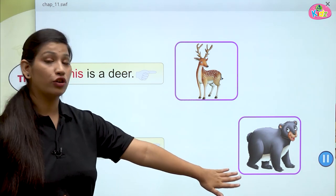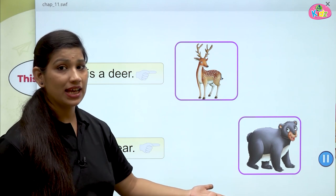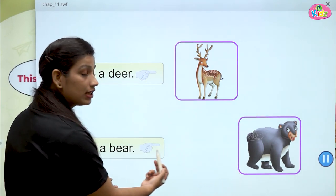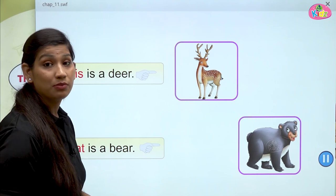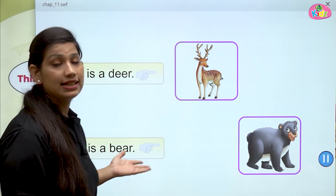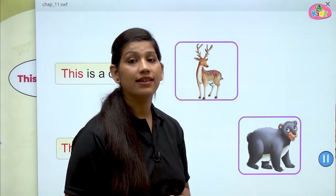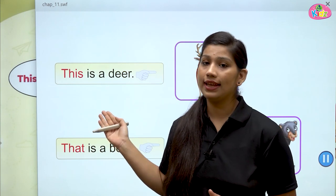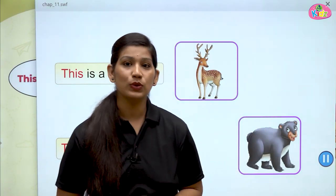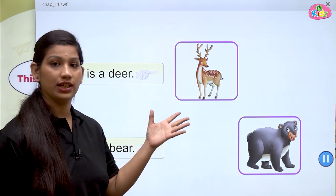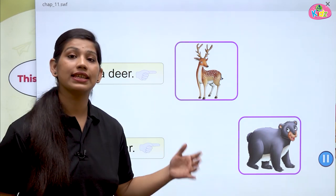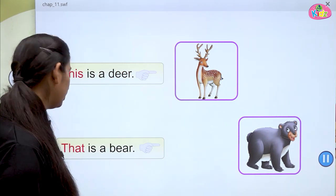But here you can see a picture of bear. Kia bear hamare paas mein hai? No, bear toh door hai. The distance between the viewer and the bear is so far — that means bear is far away. Bear toh door hai, so hum bolenge: that is a bear. This and that are sight words also. Koi bhi cheez jab paas hoti hai — jaise ki deer — toh this. Aur koi bhi cheez jab door hoti hai — jaise ki bear — toh uske saath hum that ka use karenge.